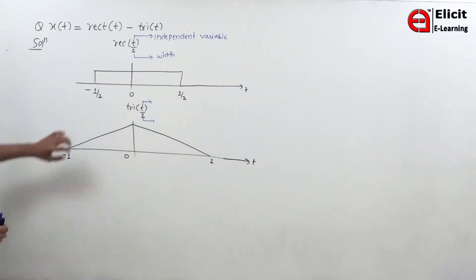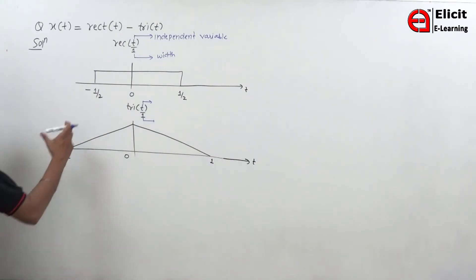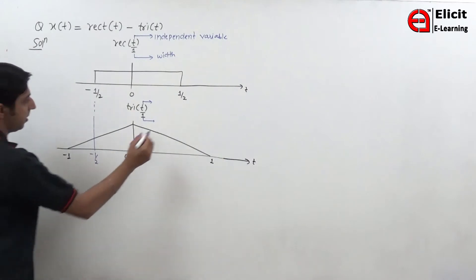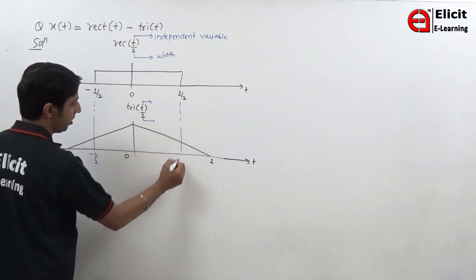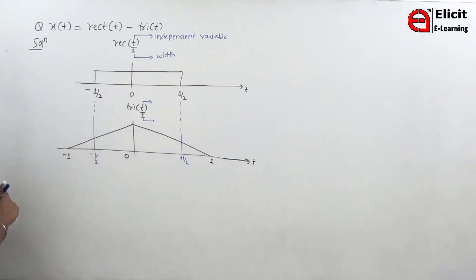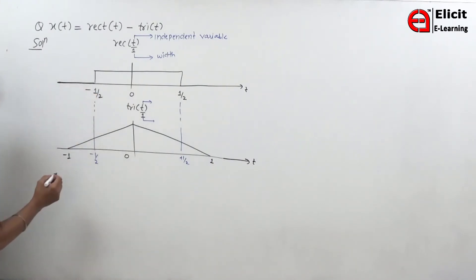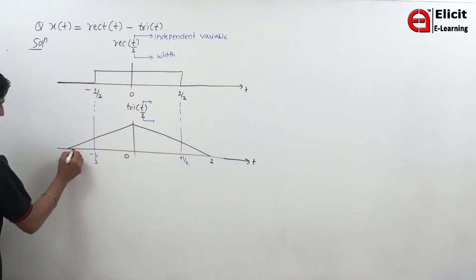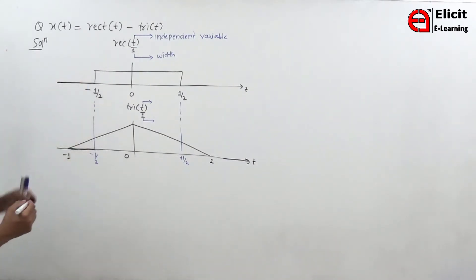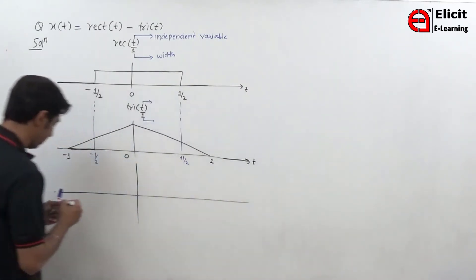Now what we have to do is subtract tri of small t from rect of small t. If you see, this is minus 1 by 2 and this is plus 1 by 2. The rect signal has value 0 outside this range, and has some definite value in between. So we have to subtract this signal from that signal. Let me draw the resultant signal.